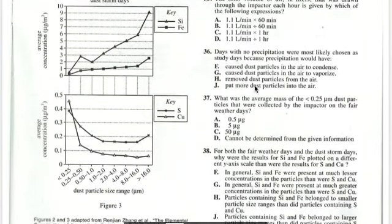So this is definitely not F because F says that silicon and iron were present at much lesser concentrations, when in fact they were present at much greater concentrations. So G says that silicon and iron were present at much greater concentrations in the particles than was sulfur and copper. This was definitely true for the fair weather days.